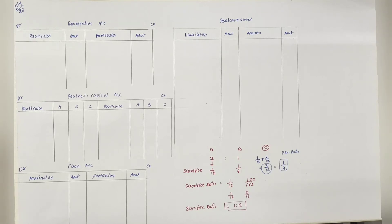And last one is number 6: Insurance premium of Rs 3,000 is to be carried forward to the next year. इसको कहीं पर tick mark नहीं करेंगे, उसको वैसे ही रहने देंगे.